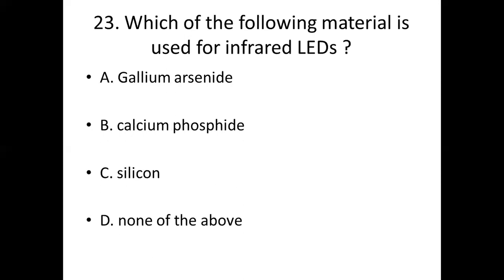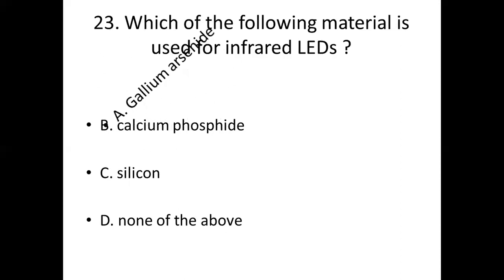Question 23: Which of the following material is used for infrared LEDs? Option A: gallium arsenide. Option B: calcium phosphide. Option C: silicon. Option D: none of the above. Answer: Option A — gallium arsenide.